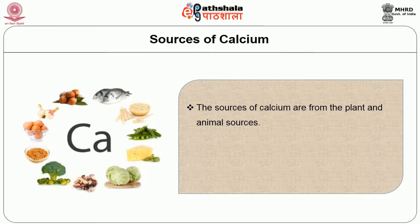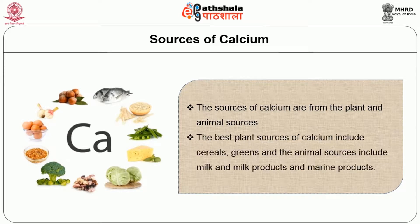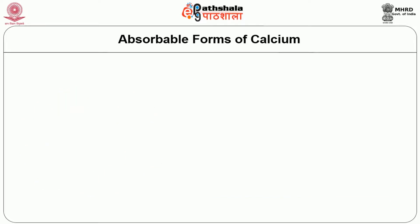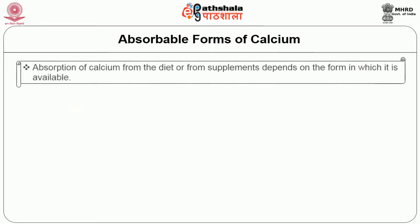The sources of calcium are from plant and animal sources. The best plant sources of calcium include cereals and greens, and the animal sources include milk and milk products and marine products.